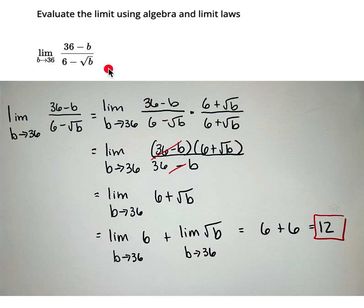In most cases when you're dealing with square roots and you can't do a direct substitution, like in this case if I take 36 and plug it into the square root of b down here, then we'll end up with 6 minus 6 in the denominator and it won't really get us anywhere.